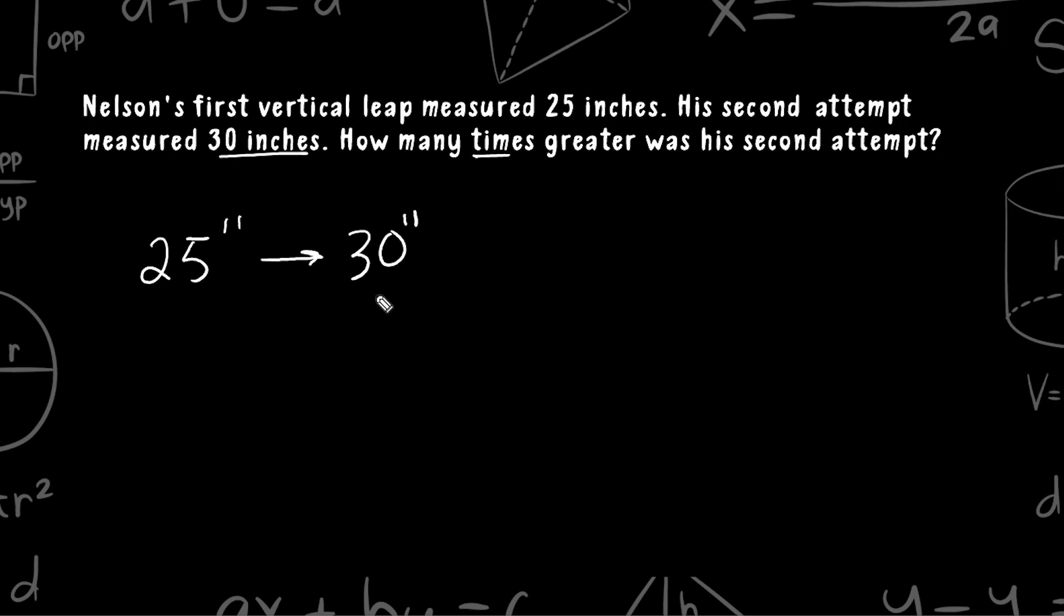So here is one way we can approach this. When asked how many times greater, we are literally asking, what would we multiply 25 by to get 30? And obviously it can't be 1 because that would be exactly 25, and it can't be 2 because that would be 50. So it's just a little bit bigger than 1. This number here should be somewhere between 1 and 2.